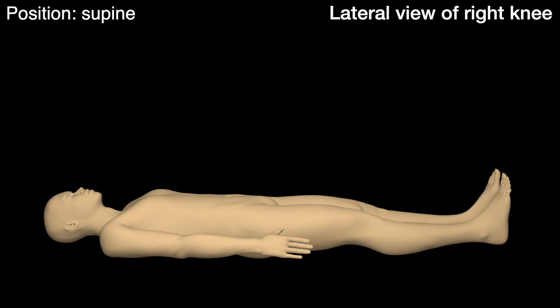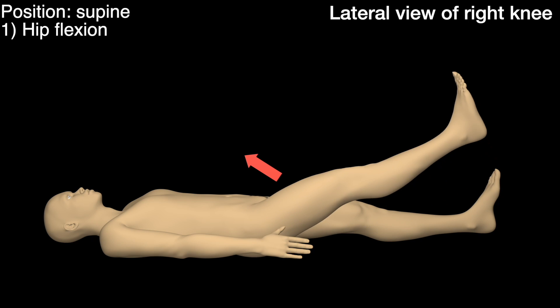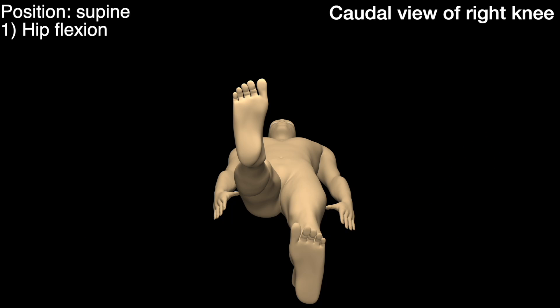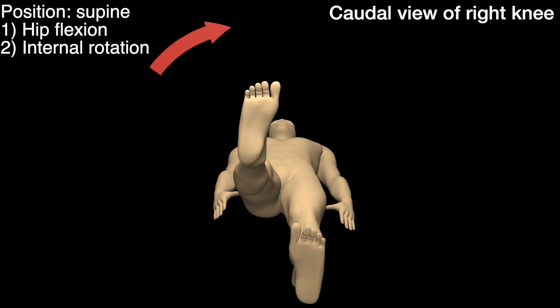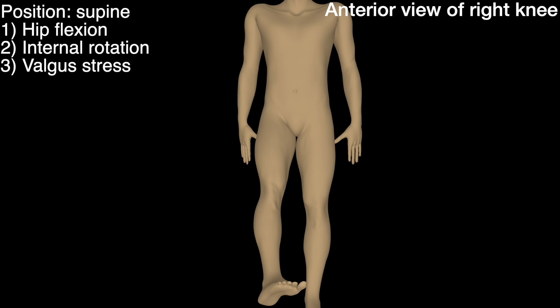This test should be performed with the patient starting in the supine position. Start by flexing the hip to around 30 to 40 degrees. Next, slightly internally rotate the tibia. Apply a valgus stress to the knee.